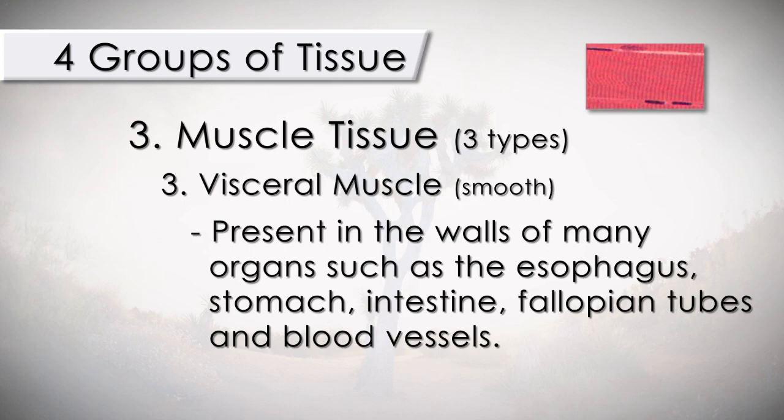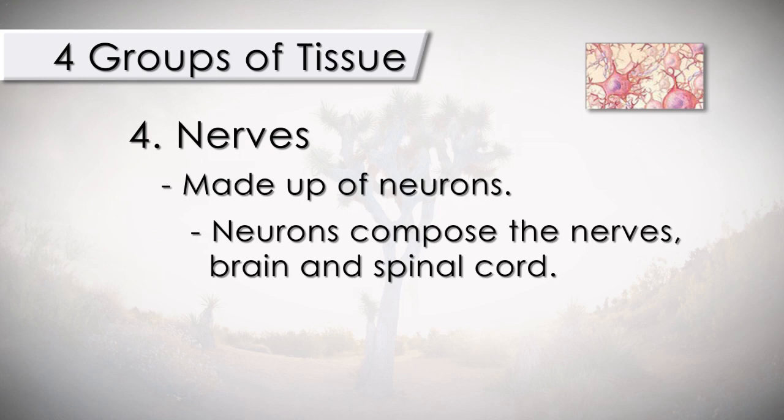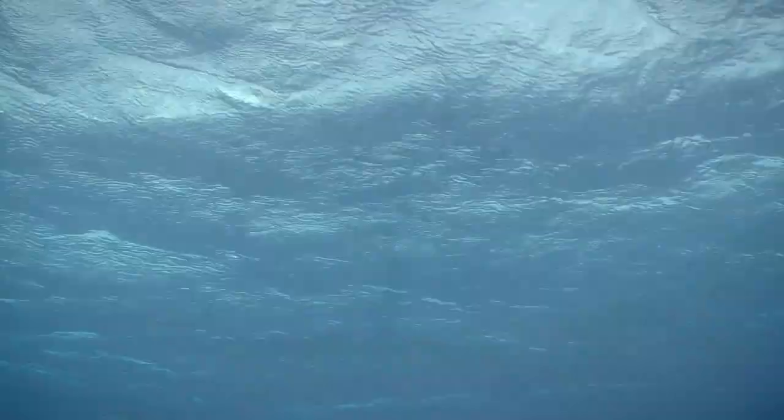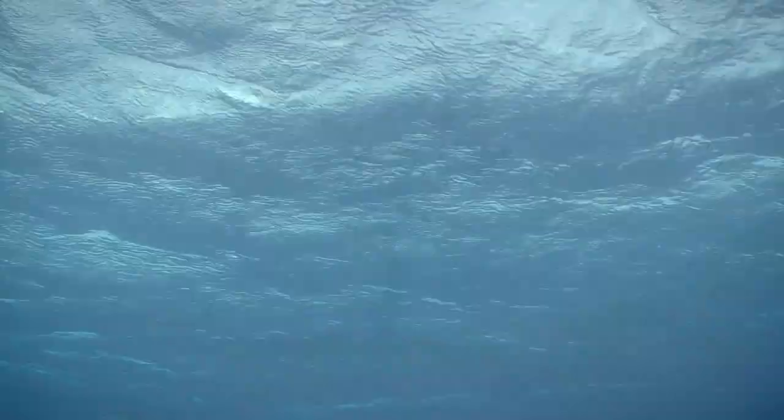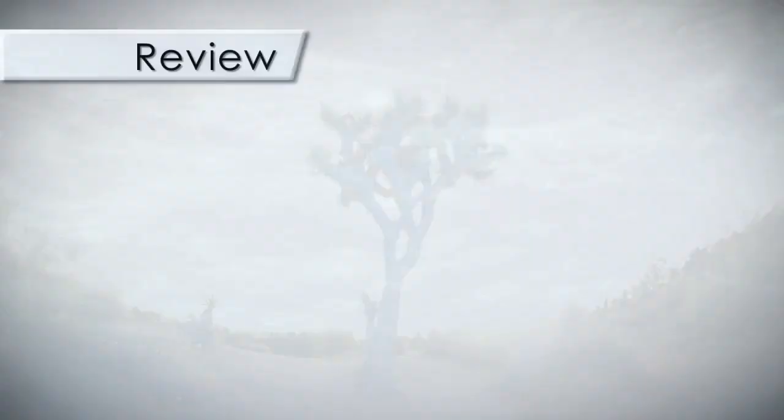The fourth main group of tissues are the nerves. Nerves are made up of neurons. These neurons compose the nerves, brain, and spinal cord. The main function is to transmit messages throughout the body. Here's one last interesting fact about tissues: they are 60 to 90% water, and water plays a role in all of the body systems.